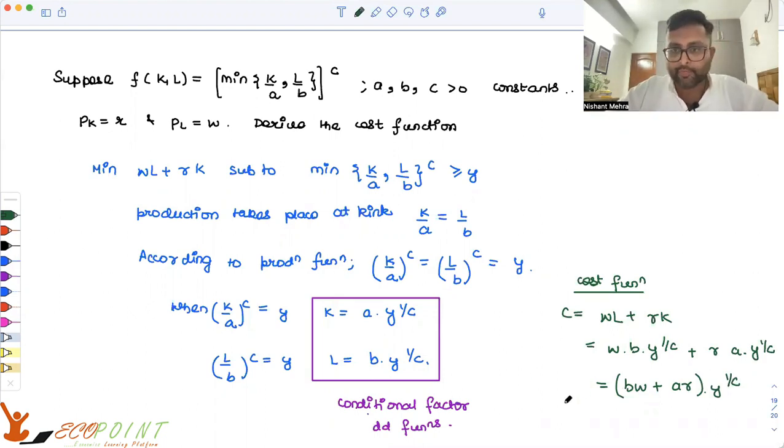And you guys can see that this cost function is the function of input prices w and r and the output.